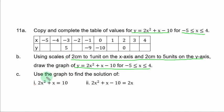Use the graph to find the solution of, that is part C, Roman figure 1: 2s squared plus s equal to 10. Roman figure 2: 2s squared plus s minus 10 equal to 2s.